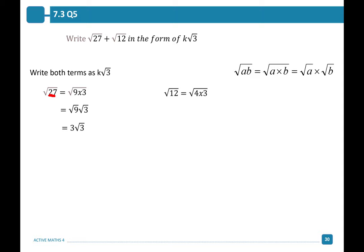Find the factors of 12 which include 3. The factors of 12 which include 3 are 4 times 3. Root 12 can be written as the square root of 4 times 3. Simplifying this we get root 12 equals root 4 times root 3. Root 4 simplifies to 2, leaving us with 2 root 3. Now that both terms are written as a multiple of root 3, we can add them together: 3 root 3 plus 2 root 3 leaves us with 5 root 3.